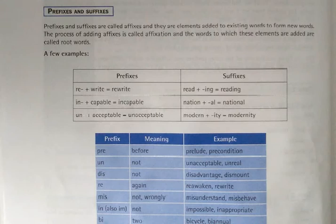Prefixes and suffixes are called affixes and they are elements added to existing words to form new words. The process of adding affixes is called affixation and the words to which these elements are added are called root words.